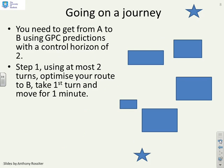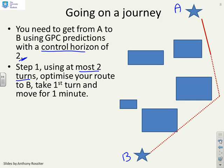I'm going to give an analogy that helps you understand where we're going. You need to get from a point A to a point B, and you're going to use a GPC-type algorithm that gives you a control horizon of 2 — meaning you can choose to change direction twice. The first step is: using at most two turns, optimise your route to B, take the first turn and move for a minute. You follow your initial direction to a certain point, then turn once and reach B. That's an example of an optimisation that might come out of a GPC algorithm.